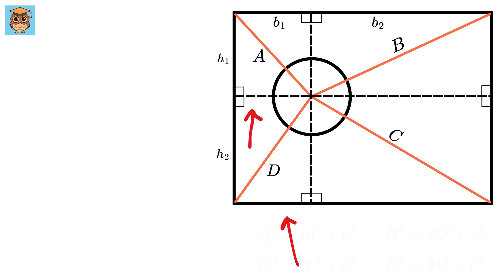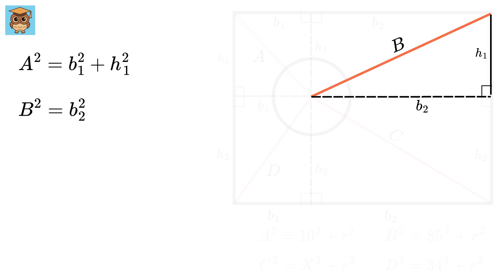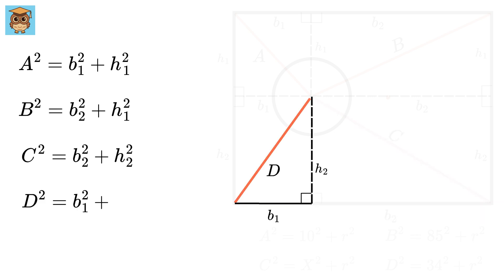So, this will also be b1, this will be the same as b2, this will be h1 and this will be h2. So, we have a square equals b1 square plus h1 square. Then, b square equals b2 square plus h1 square. Then, c square equals b2 square plus h2 square. Finally, d square equals b1 square plus h2 square.